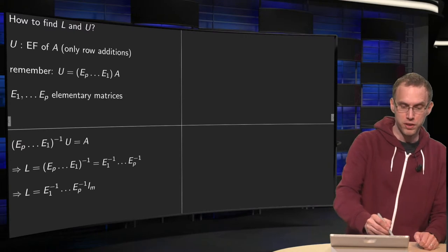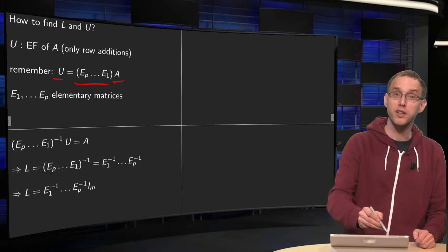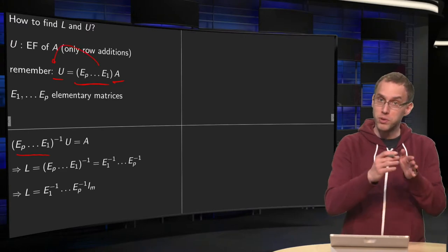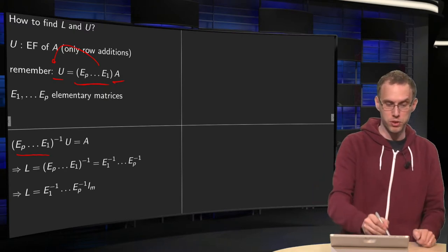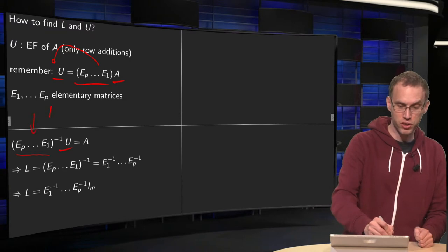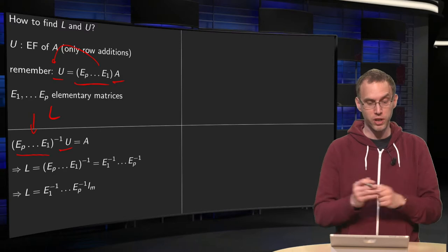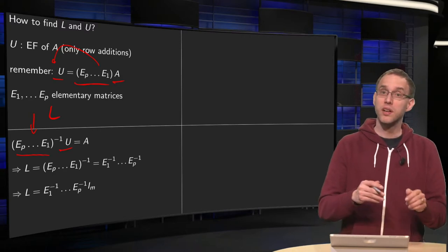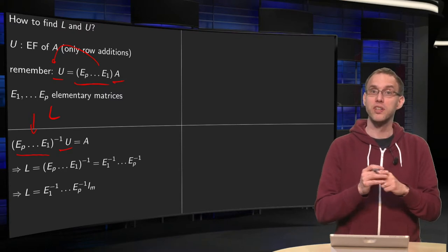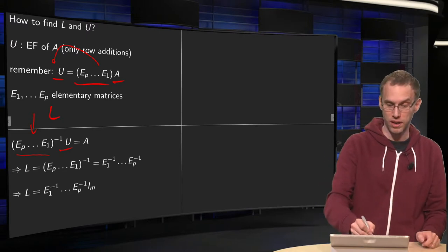We have U equals this product that you know times A. Now we can invert this product, bring it to the other side. Then we get EP up to E1 inverse times U equals A. But there you have your L. This over here is just your L, so your L is the inverse of EP up to E1. And if you multiply this out, if you take the inverse of a product that yields the product of the inverses, but then in the reverse order, like this.